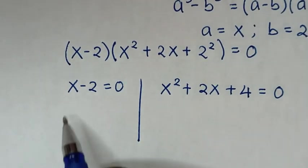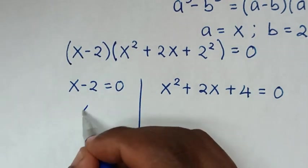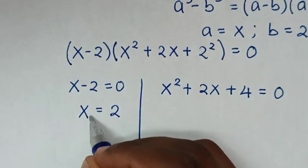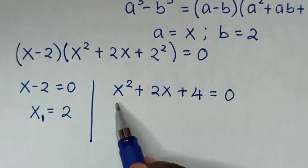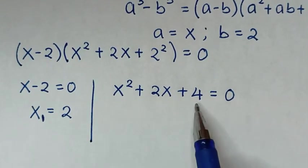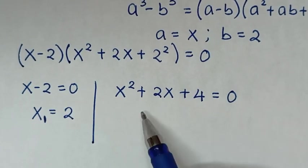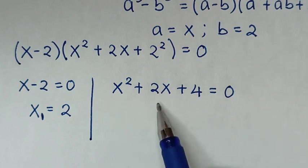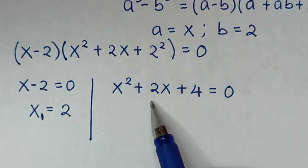To solve the first solution, we take negative 2 to the right side, giving x = 2. So x = 2 is the first value of x. To solve the quadratic equation, we can use the quadratic formula or solve it by completing the square. Let's solve it by completing the square.